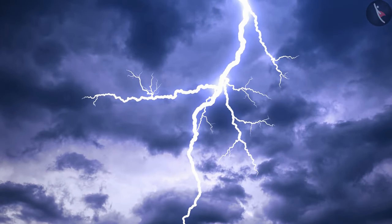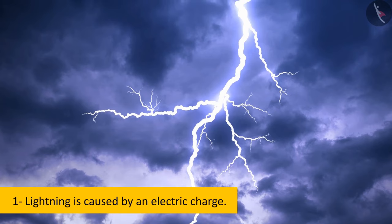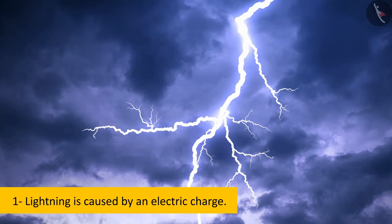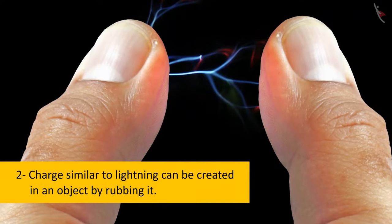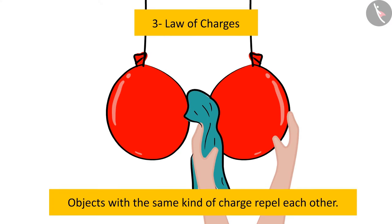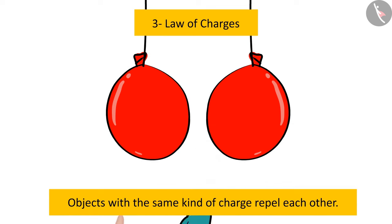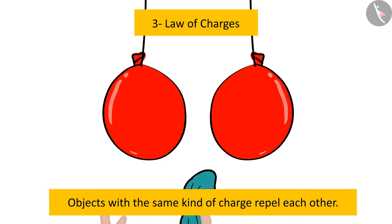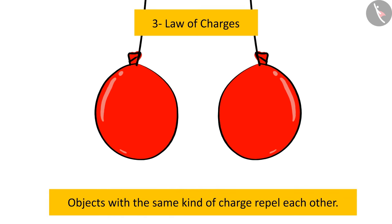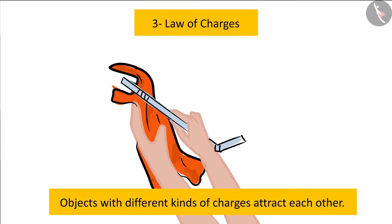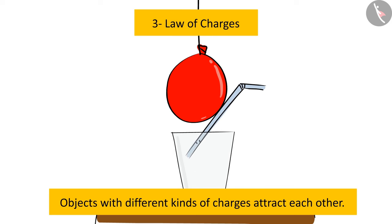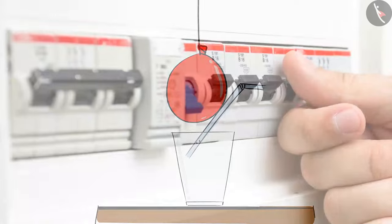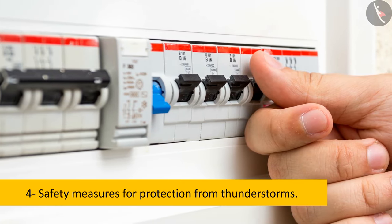So far, we have learnt: Lightning is caused by an electric charge. Charge similar to lightning can be created in an object by rubbing it. Law of Charges: objects with the same kind of charge repel each other, and objects with different kinds of charges attract each other. Safety measures for protection from thunderstorms.